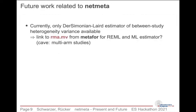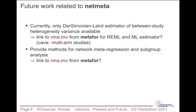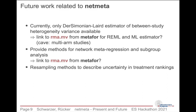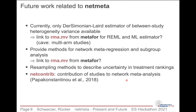This is what you can do with NetMeta at the moment. Currently only the DerSimonian-Laird estimator is implemented for between-study heterogeneity variance. Our plan is to link NetMeta to metafor and use RMAMV to get REML and ML estimators for between-study heterogeneity. If we can sort out how multi-arm studies are handled differently in metafor, we can also provide methods for network meta-regression and subgroup analysis via a link to RMAMV. We would also like to use resampling methods to describe uncertainty in treatment rankings.